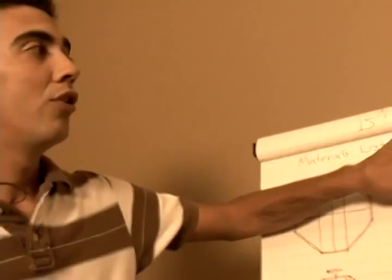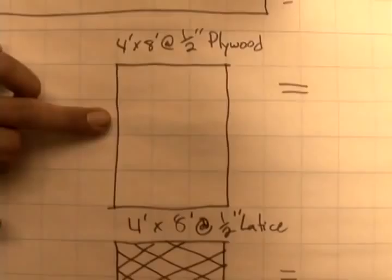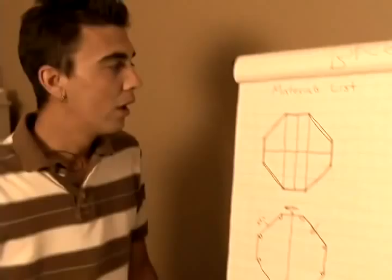We know we're going to need two by fours at eight foot lengths, four by fours at eight foot lengths, one by two furring strips at eight foot lengths, four by eight by half inch thick sheets of plywood, and four by eight lattices. Now let's figure out exactly how many of these we need.